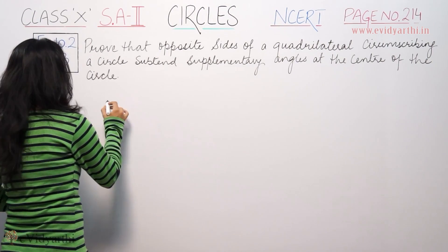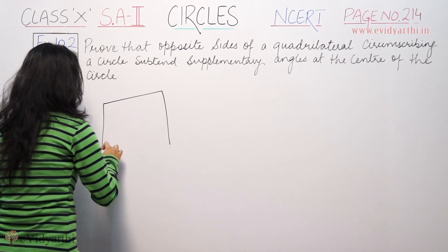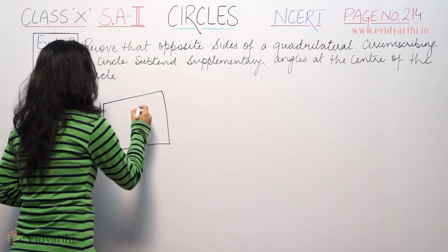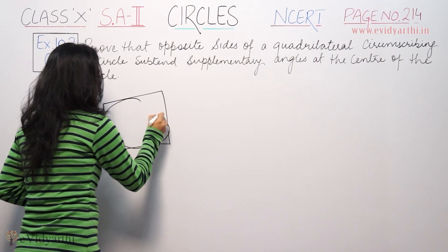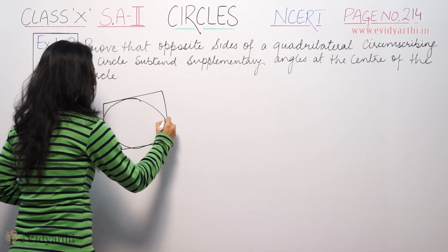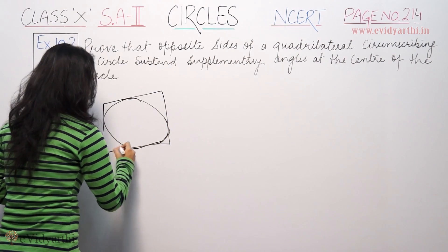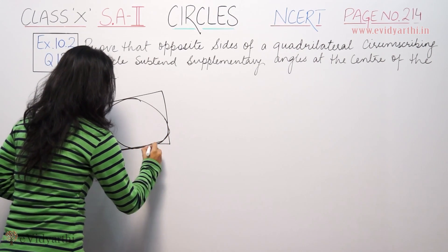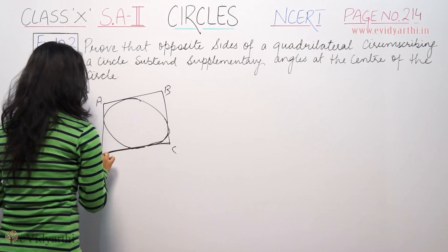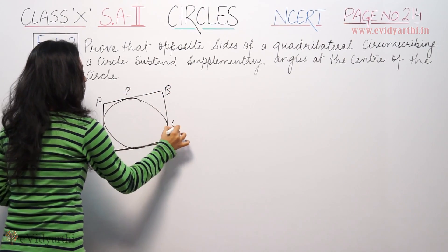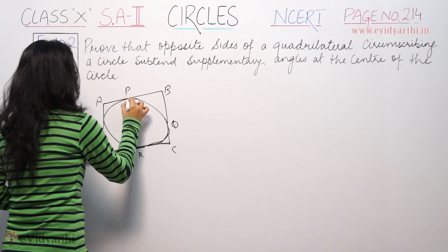So we have to prove the quadrilateral here. This is the entire circle. So this is A, B, C, D, and the points are P, Q, R, S. This is the center O.